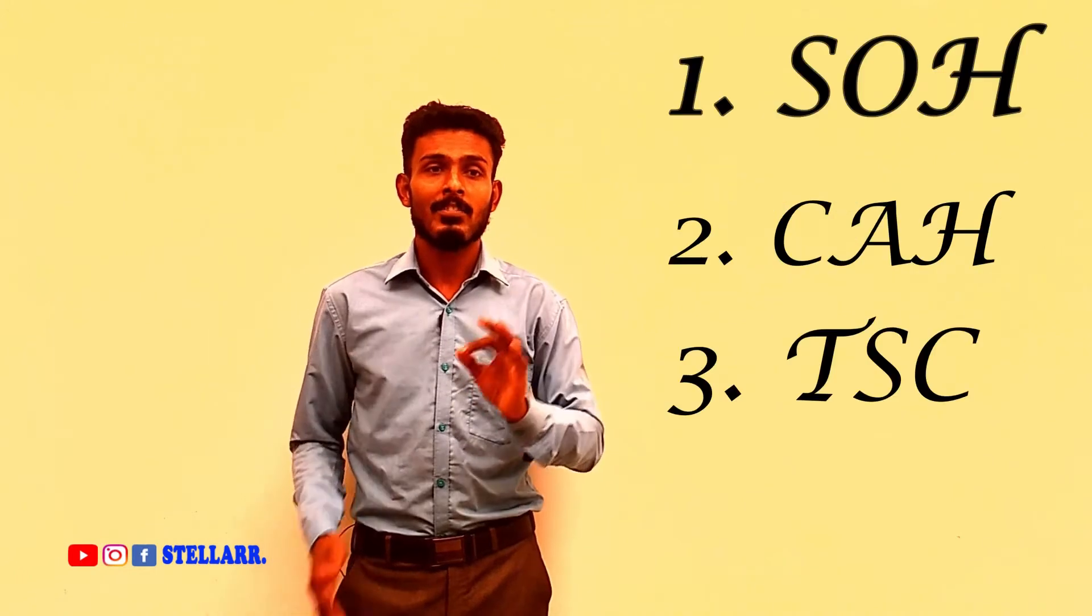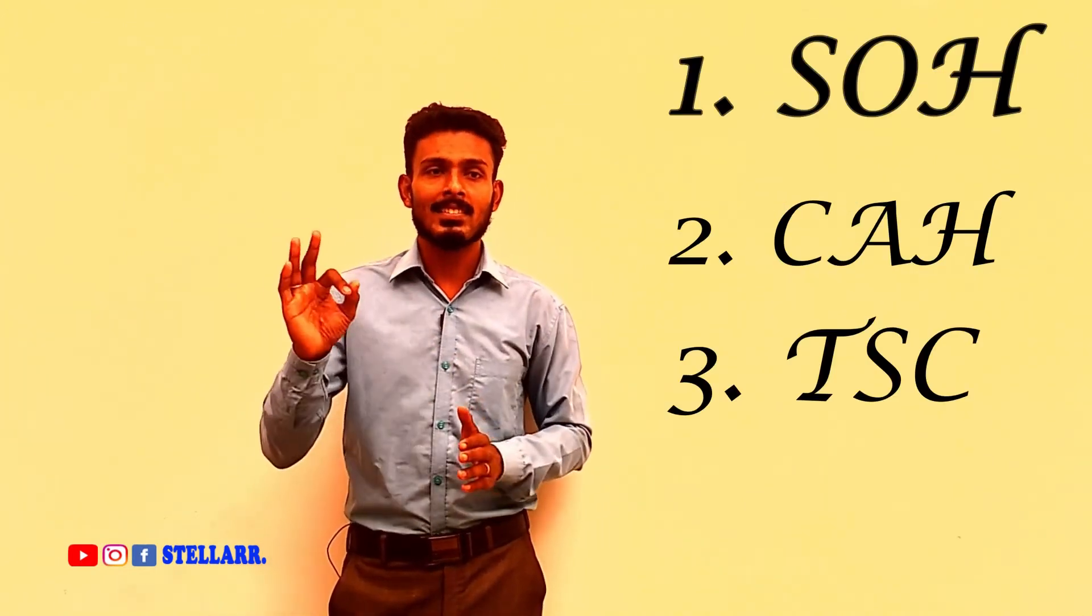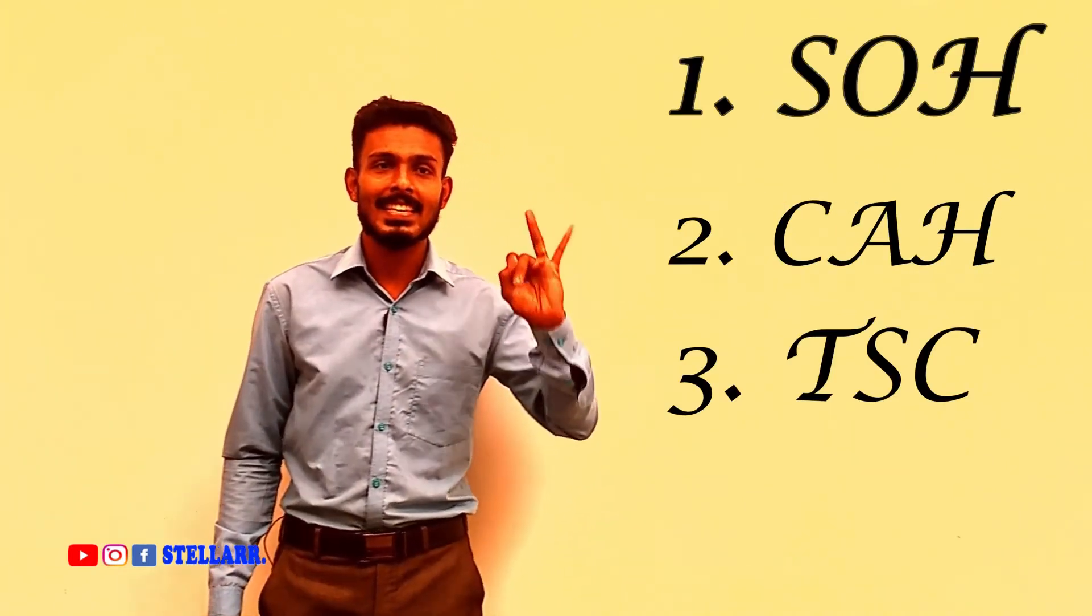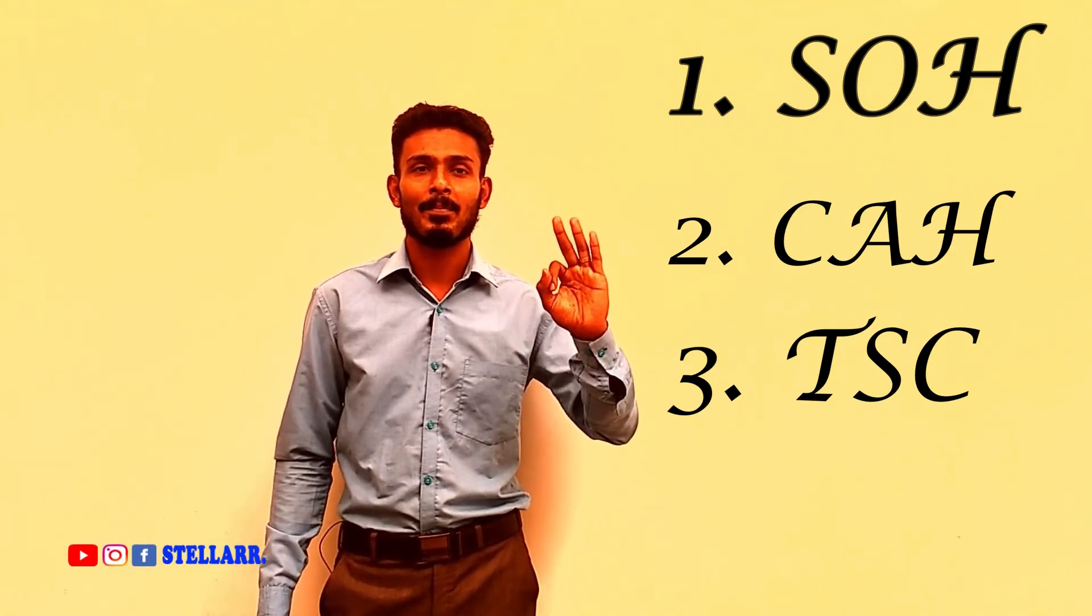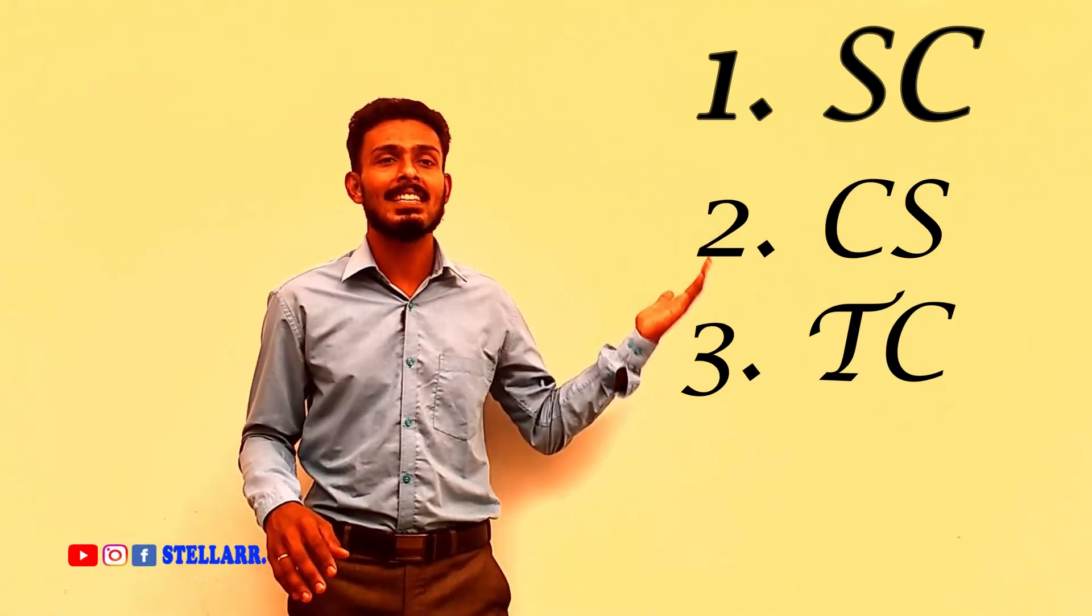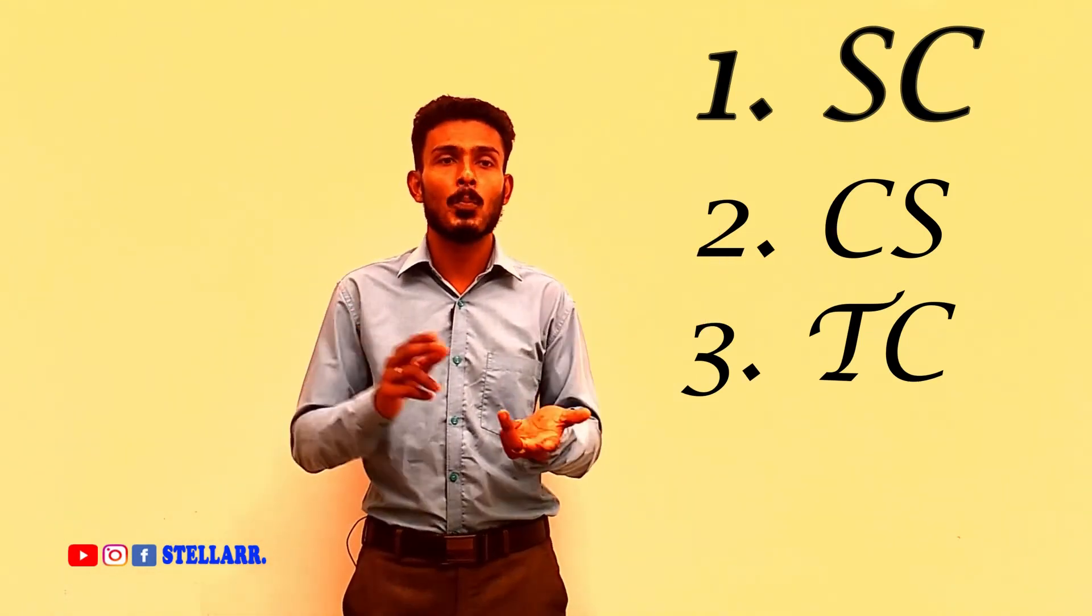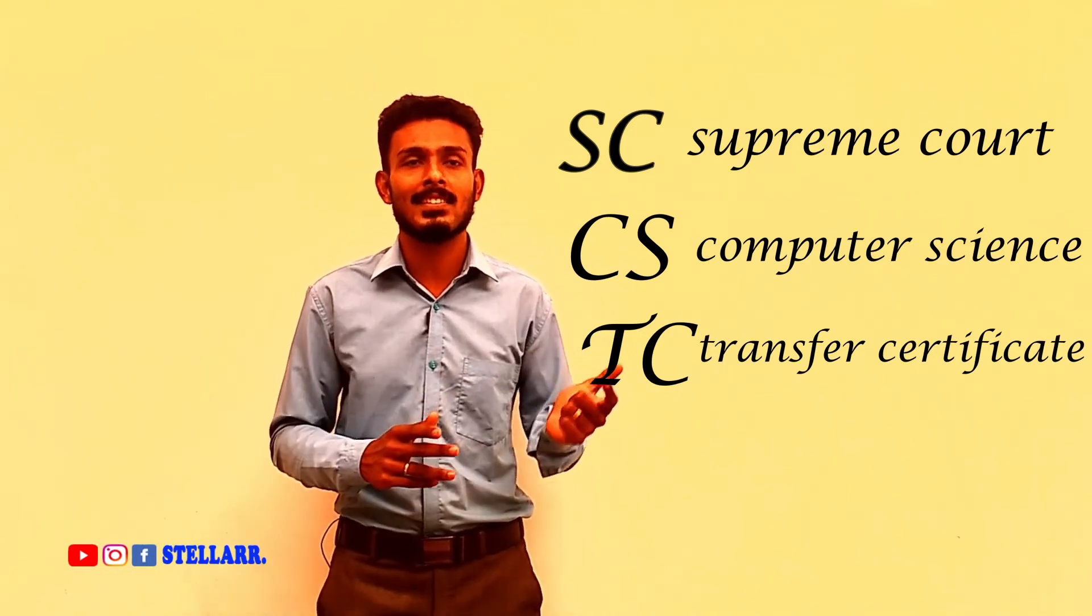That is, we have to remember only three things: SOH, CAH, and TOA. If you know these three basic trigonometric ratios, you can derive the other three ratios. We have to remember three things again: SC, CS, and TC. Just remember as supreme court, computer science, and TC.